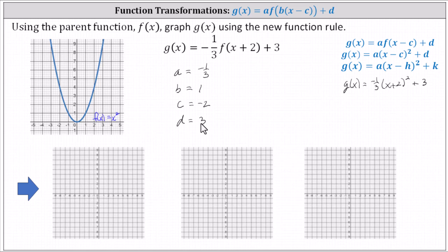Recall if a equals negative one-third, we have a vertical reflection as well as a vertical compression by a factor of one-third. Because b equals one, there is no horizontal stretch or compression. Because c equals negative two, we have a shift left two units. And because d equals three, we have a shift up three units.